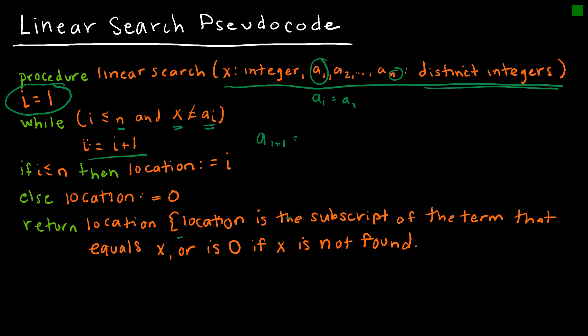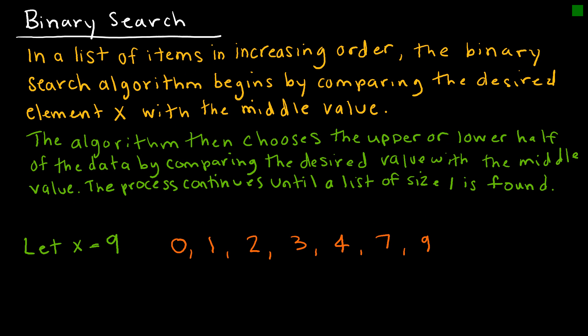If a sub one isn't our X value, we go on to a sub one plus one, which is a sub two. Then we say: if i, the subscript, is less than or equal to n, then the location is i; otherwise the location is zero. A location of zero means we haven't found the value we're looking for. The return is the location, which is i — the subscript of the term that equals X — or zero if it is not found. That's where the else comes in.